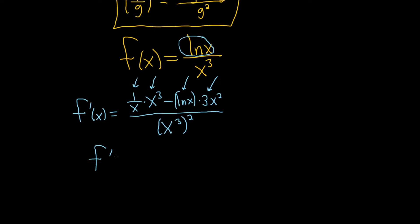So we have f prime of x. This is equal to, we get some cancellation here. 3 minus 1 is 2. So we get x squared minus. And then you can put this in the front. So 3x squared ln x. All divided by. And then here we can use a property of exponents. 2 times 3 is 6. We simply get x to the 6.